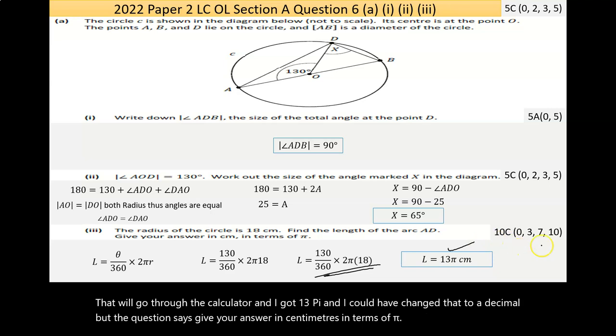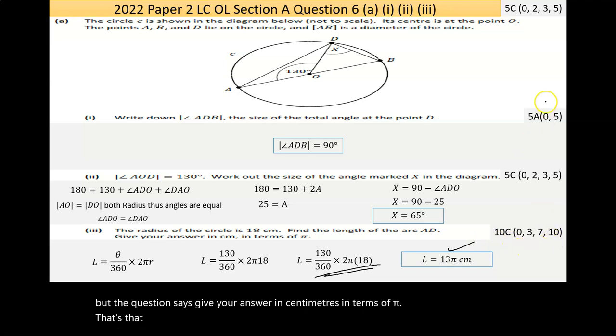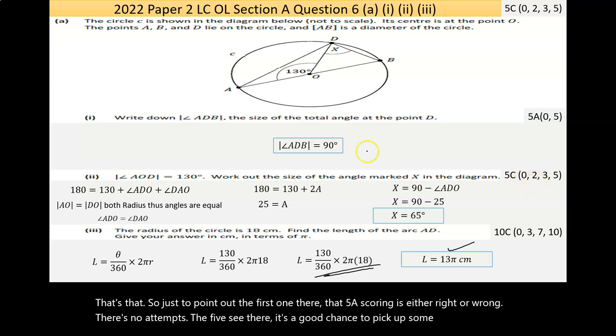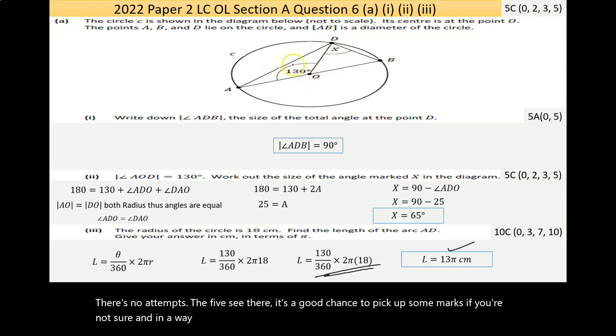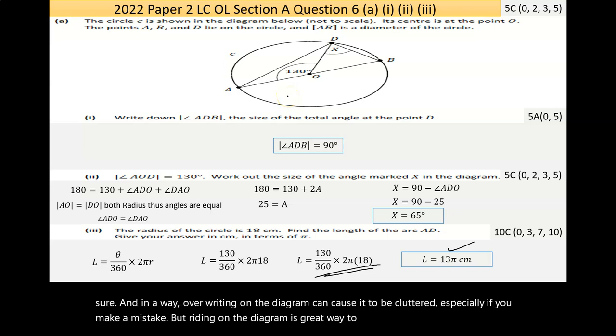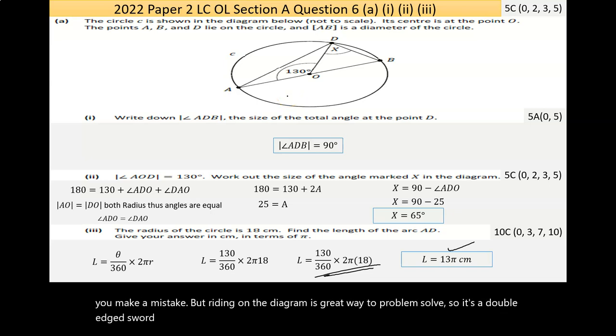The first one, that 5A scoring, is either right or wrong with no attempts. The 5C is a good chance to pick up marks if you're not sure. Writing on the diagram can cause it to be cluttered, especially if you make a mistake, but it's a great way to problem solve.